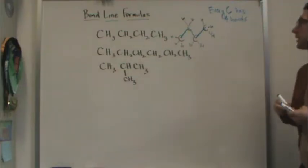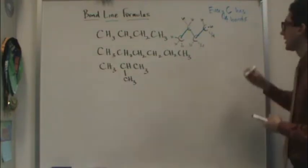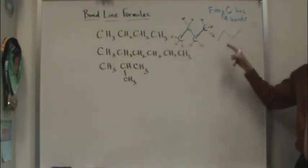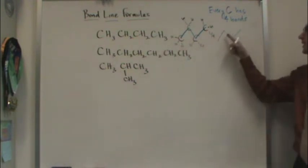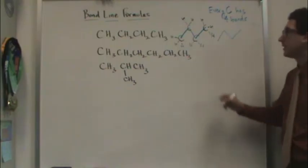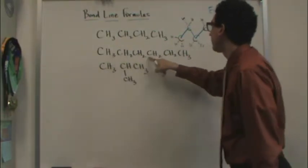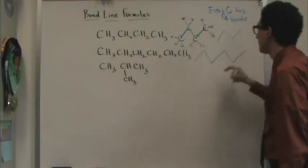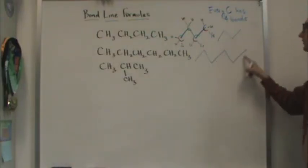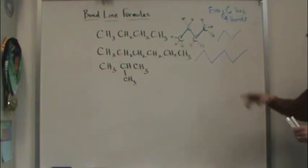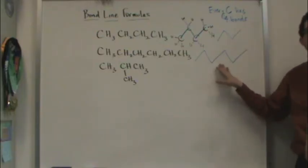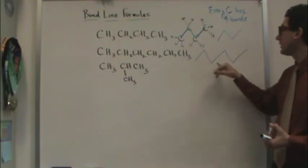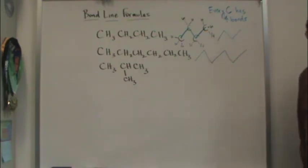So we use this bond-line formula just to make things simple. Again, the bond-line formula for this four-carbon chain is just that — you just draw a zigzag until you get four points. This one has one, two, three, four, five, six carbons, so I'm going to zigzag until I get six. I know that there are hydrogens there — they're assumed because every carbon has four bonds, and the missing bonds on carbons are just hydrogens.